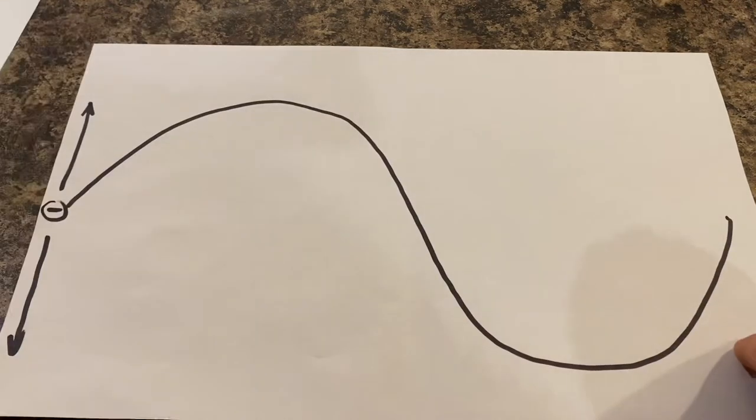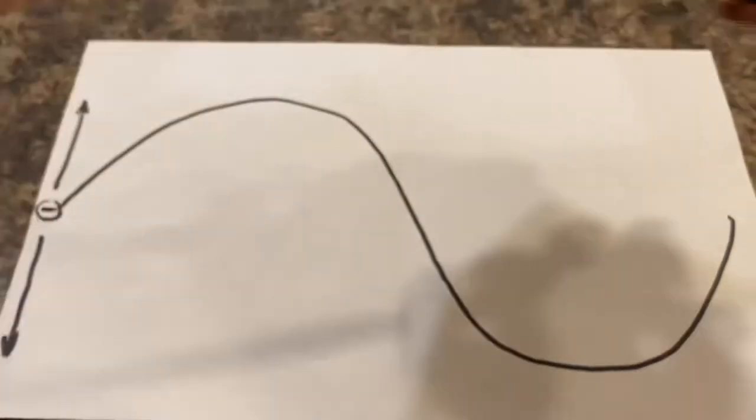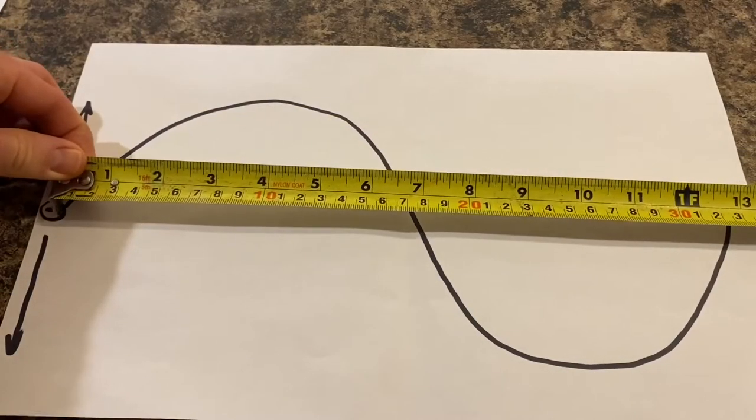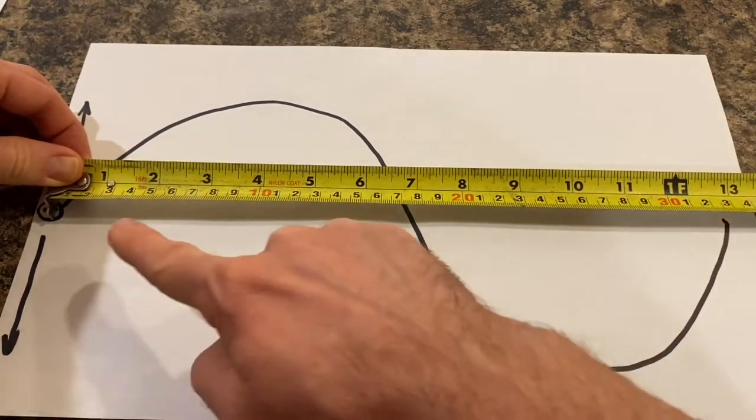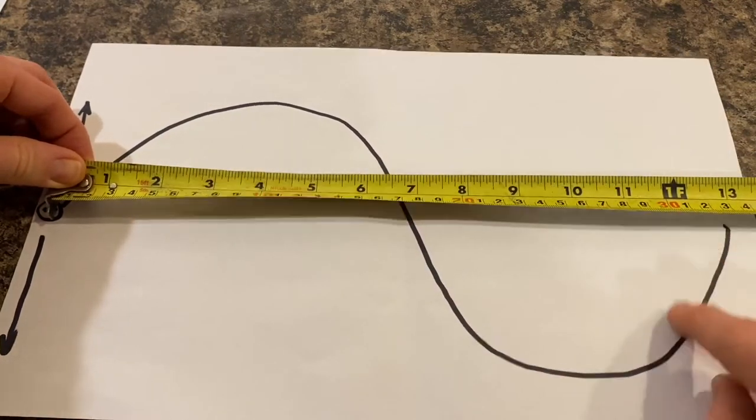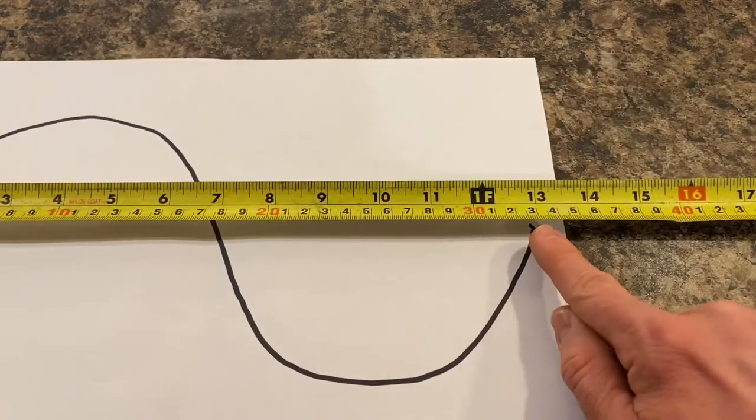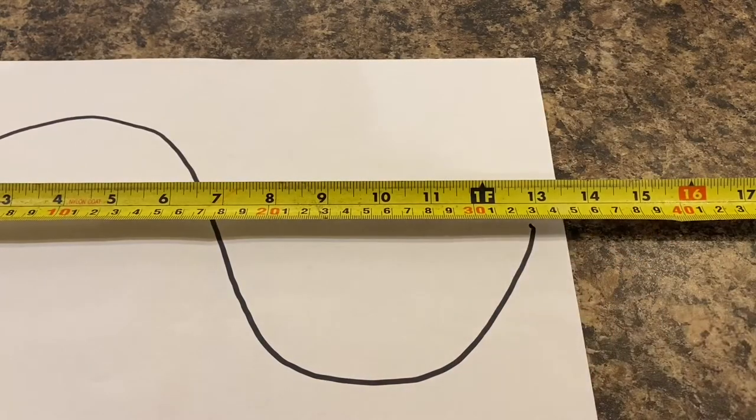So on our tape measure, we should have a 33 centimeter wavelength. We come over here, there's 30, 33. 33 centimeters. Perfect.